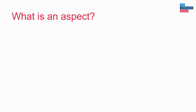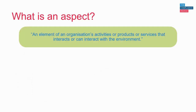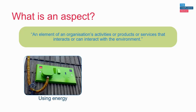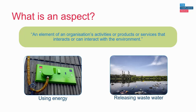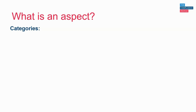So what actually is an aspect? The standard defines an aspect as an element of an organisation's activities, products or services that interacts or can interact with the environment. Examples include the electricity used to power equipment or the waste water produced during a manufacturing process — these are ways an organisation is interacting with the environment. It's useful to think about the categories that aspects can be split into, and the standard suggests the following categories.